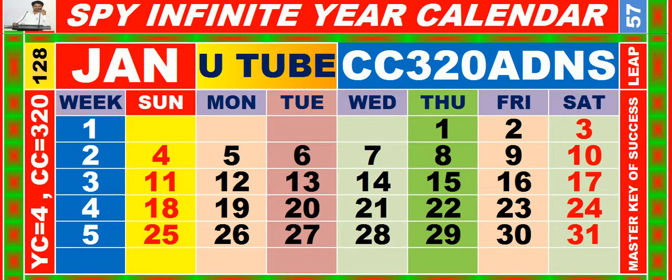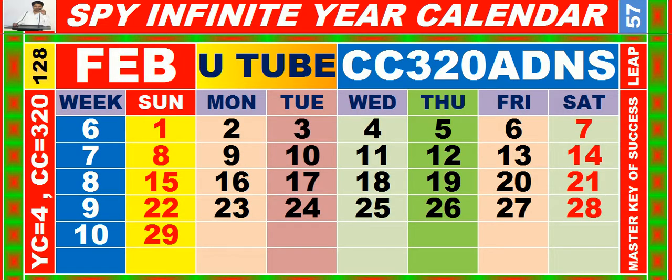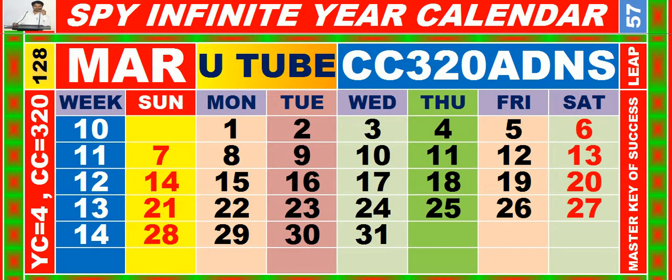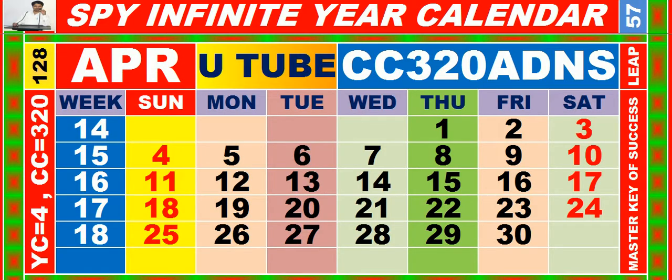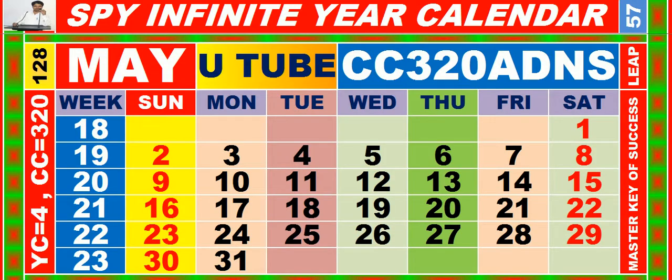Calendar for the month of January, having calendar code equal to 3, 2, 0. Calendar for the month of February, having calendar code equal to 3, 2, 0. Calendar for the month of March, having calendar code equal to 3, 2, 0. Calendar for the month of April, having calendar code equal to 3, 2, 0. Calendar for the month of May, having calendar code equal to 3, 2, 0.